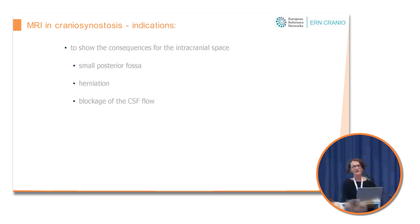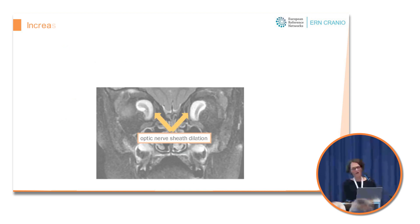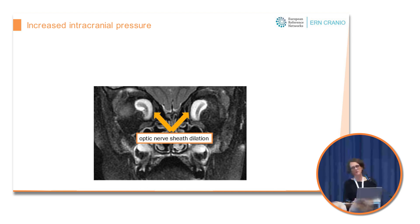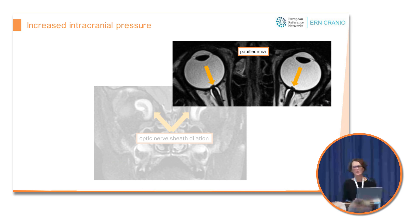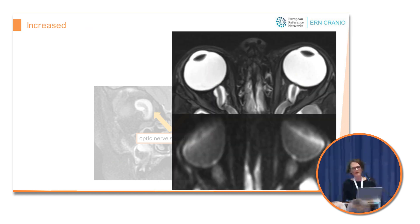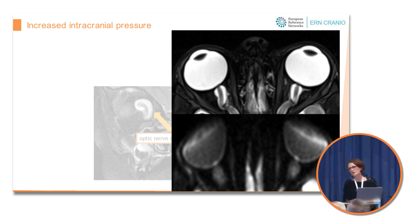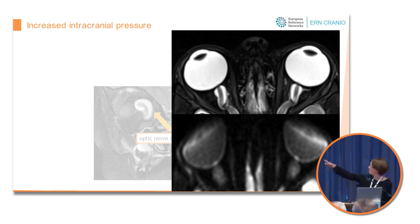We have to find signs of increased intracranial pressure in these patients. Dilation of the optic nerve sheath is always a sign of emergency. You can also find papilledema, but you really need high-resolution MRI images to see that. Remember to look at your diffusion-weighted series, where you can diagnose papilledema by the bright signal on the B1000 image.